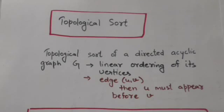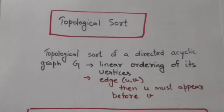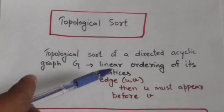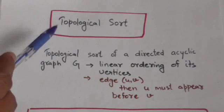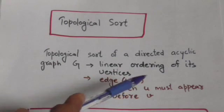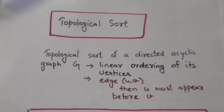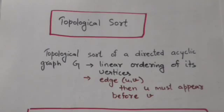Hello friends, welcome back. In this tutorial we will study about topological sort. A topological sort of a directed acyclic graph G is a linear ordering of all its vertices such that if in directed acyclic graph G there is an edge UV, then U must appear before V in the ordering.